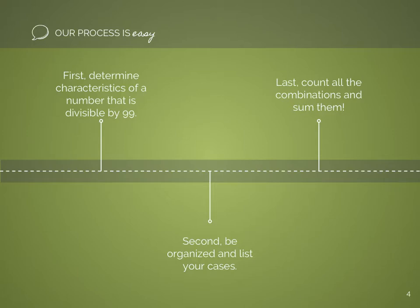First, what we need to do is determine characteristics of a number that's divisible by 99. Second, we can be organized and start listing our cases. And last, we'll count all the combinations and then sum them.